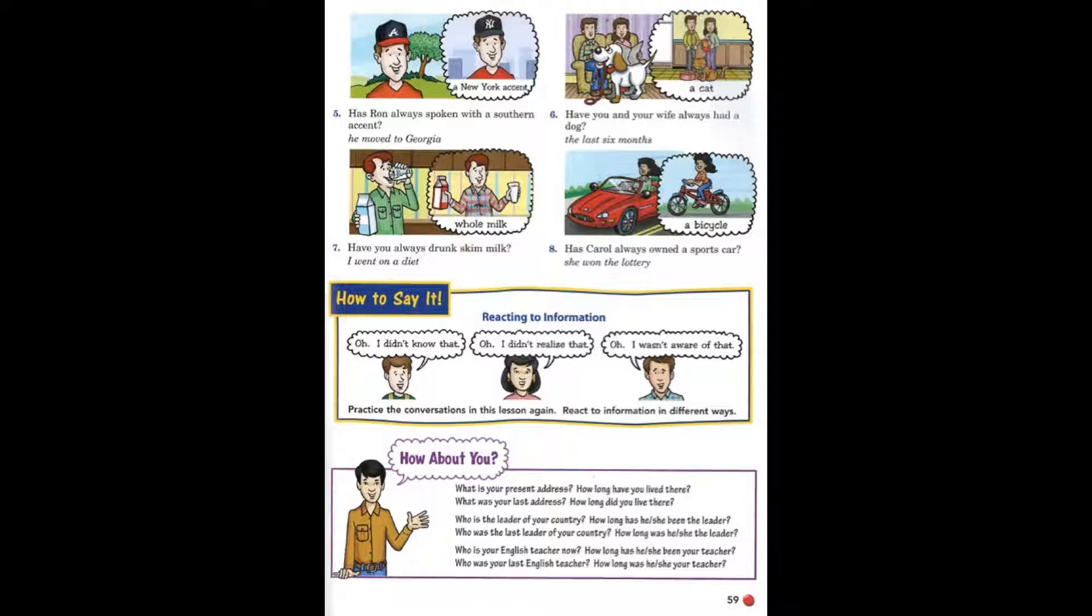6. Have you and your wife always had a dog? No. We've had a dog for the last six months. Before that, we had a cat.